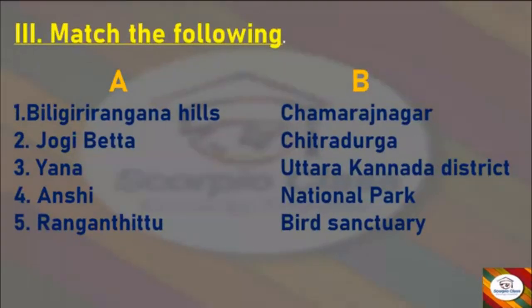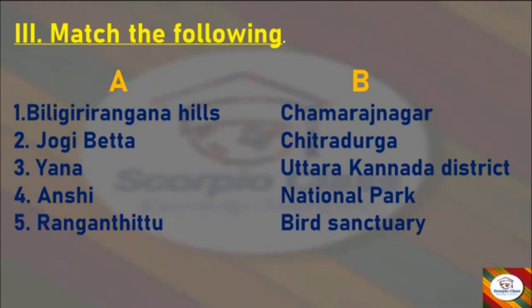Now we have the next section: match the following. We have column A and column B, and here the answers are matched in front of each item. Biligiri Rangana Hills — Chamarajanagar. Jogi Betta — Chitradurga. Yana — Uttara Kannada District. Anshi — National Park. Ranganathittu — Bird Sanctuary. So here we have completed the match the following section.